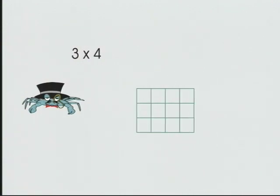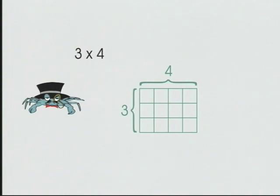Once complete, we have a rectangle that is three units long and four units wide. To find the product, we then count the number of units it took to build the rectangle.